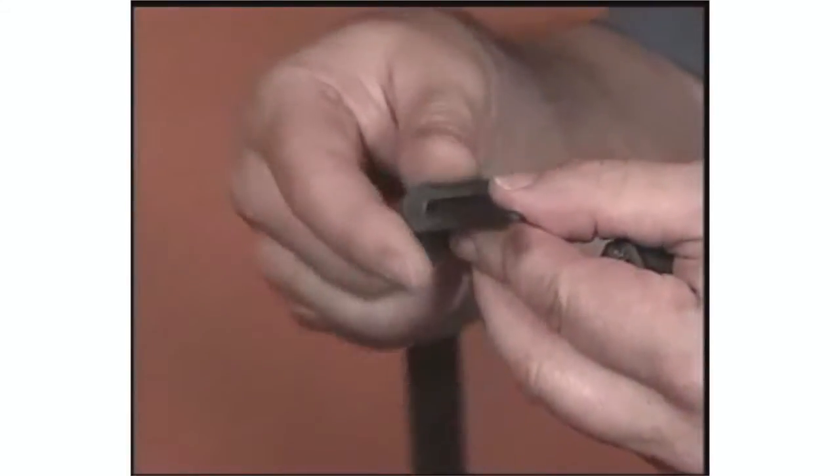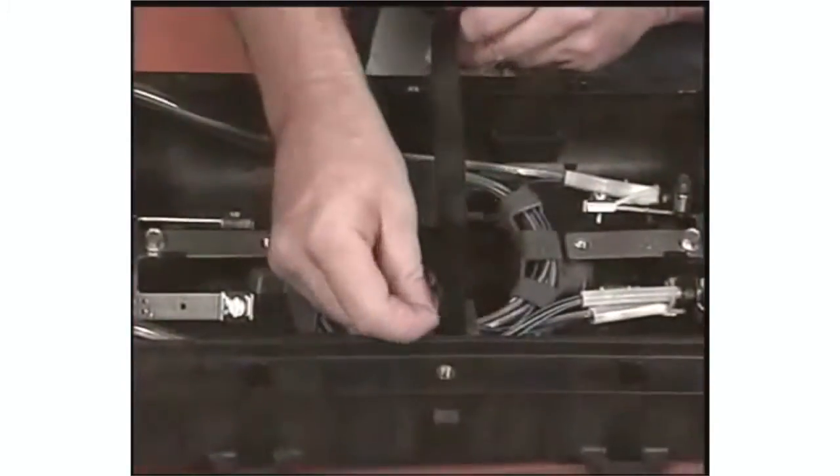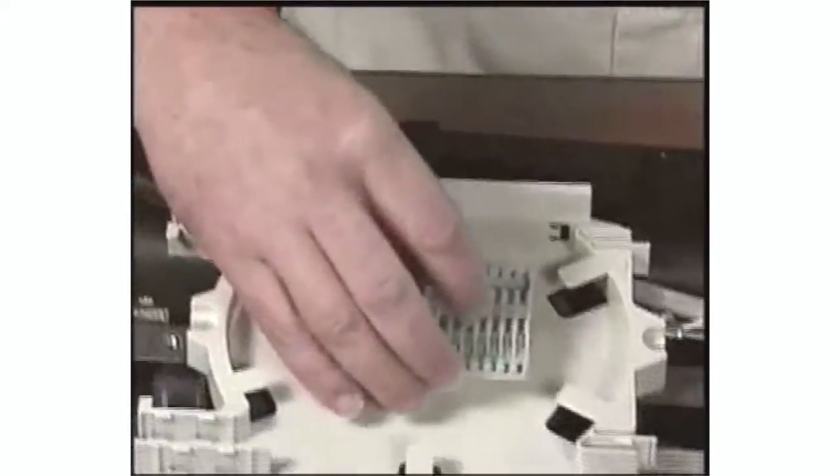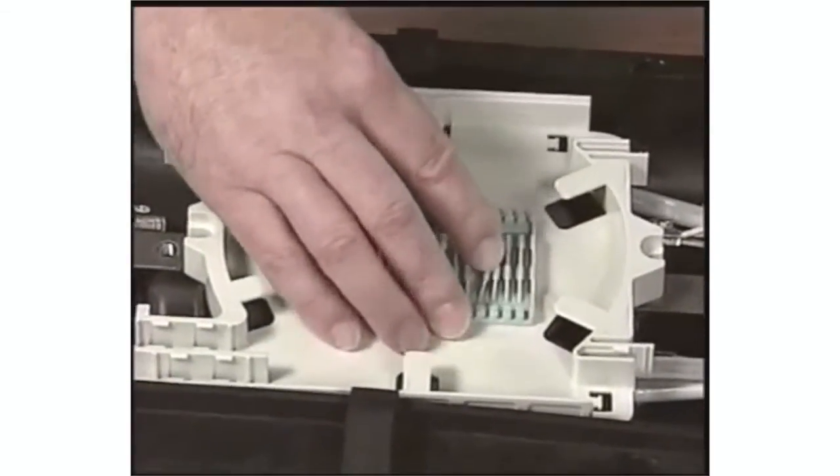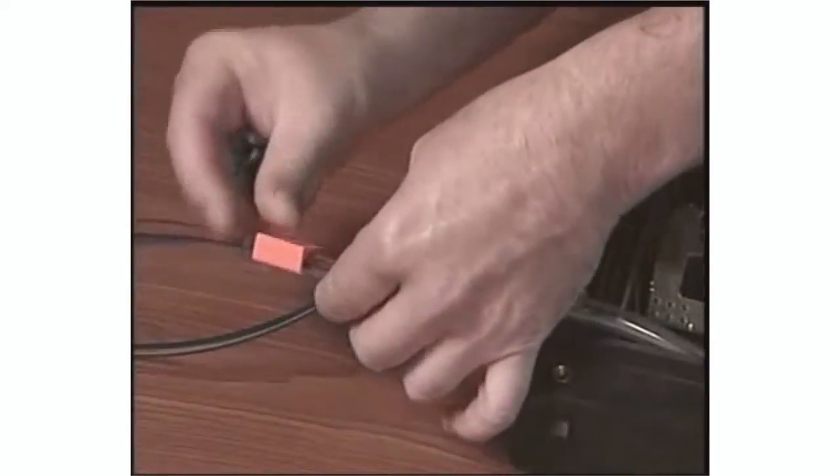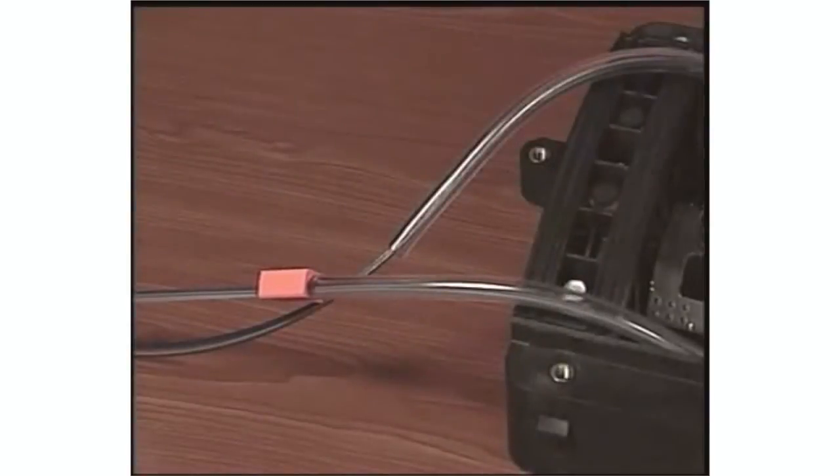Thread the velcro strap through each clip and insert it into the center slots of the closure base. Remove the protective lining from the adhesive on the back of the splice block. Apply the splice block to the base of the splice tray.